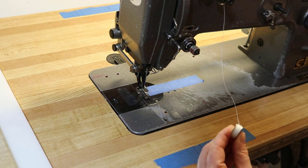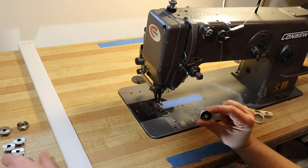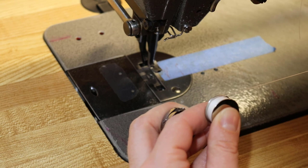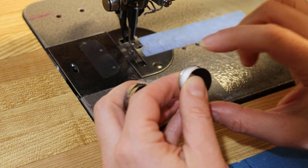So there is a bobbin wound. And then if I want to put it in the case, I make sure that the thread is coming off the bobbin to the right and over the top. So clockwise. So as it's facing me, it's unwinding to the right over the top.